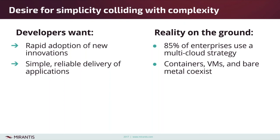This obviously poses some complexity to application developers. If you're a developer trying to deploy an application, traditionally it could be tricky to figure out how to easily deploy onto multiple different types of infrastructure. If you're deploying onto OpenStack, you might start by using a heat template to provision your virtual resources. If you're on AWS, you would probably start with CloudFormation. You really don't want to have to reinvent all this plumbing every time you move to a different cloud platform.